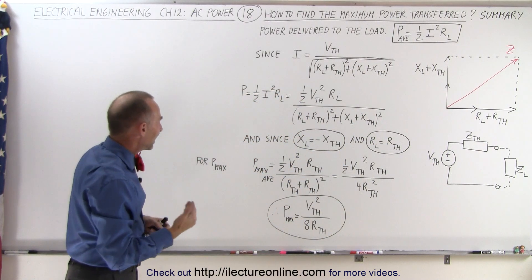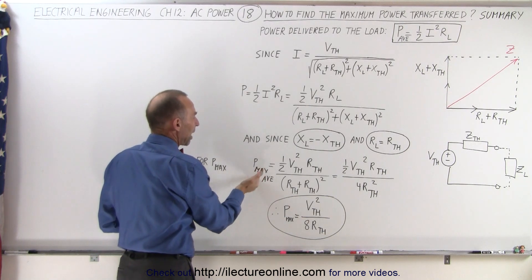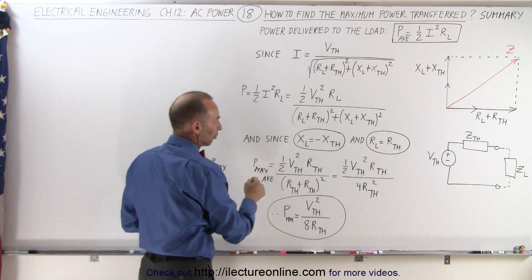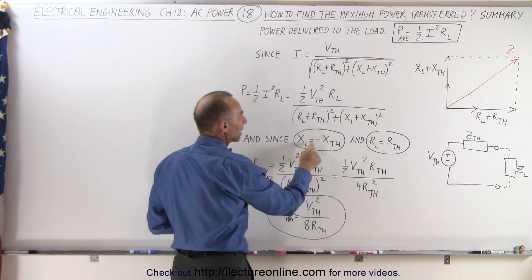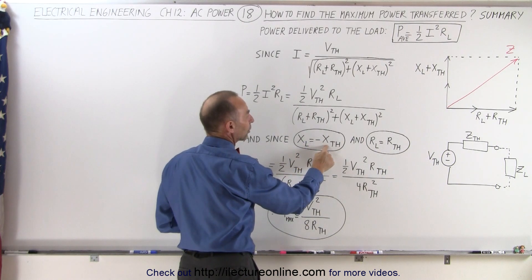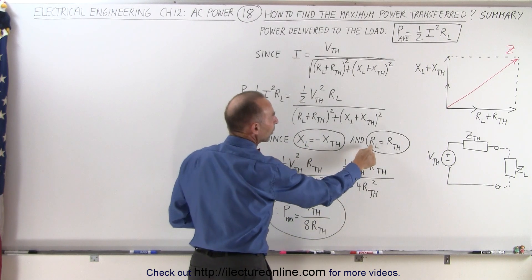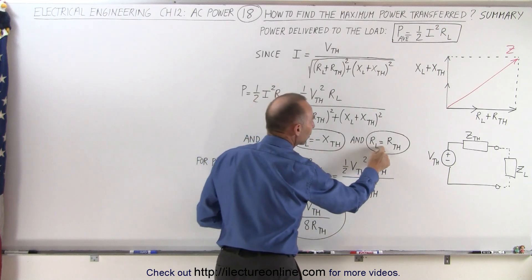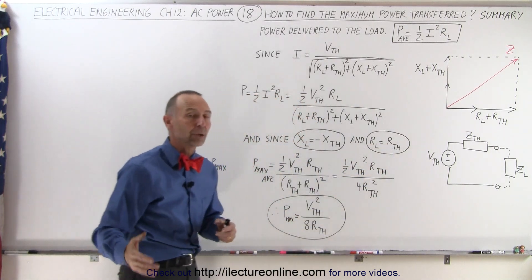Notice that to get the average maximum power delivered we have two conditions. We want the reactance of the load to equal the negative reactance of the Thevenin equivalent circuit. We want the resistance of the load to equal the resistance of the Thevenin equivalent circuit.